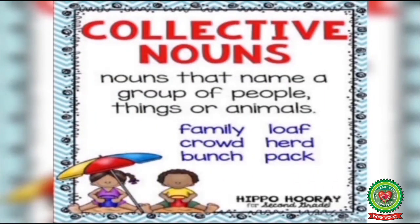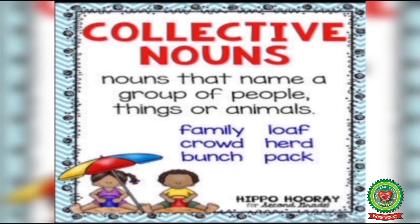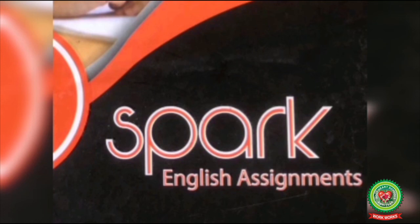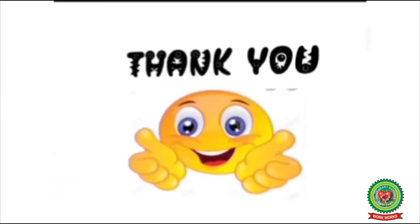I hope it is clear to you what a Collective Noun is — nouns that name a group of people, things, or animals, like family, crowd, bunch, herd, and pack. Now you will be able to identify a Collective Noun in a sentence. You have already done this chapter on Collective Nouns from the Grammar Magic Book. Now you will solve the exercises related to this according to your SNAP homework schedule from Spark English Assignments. Thank you.